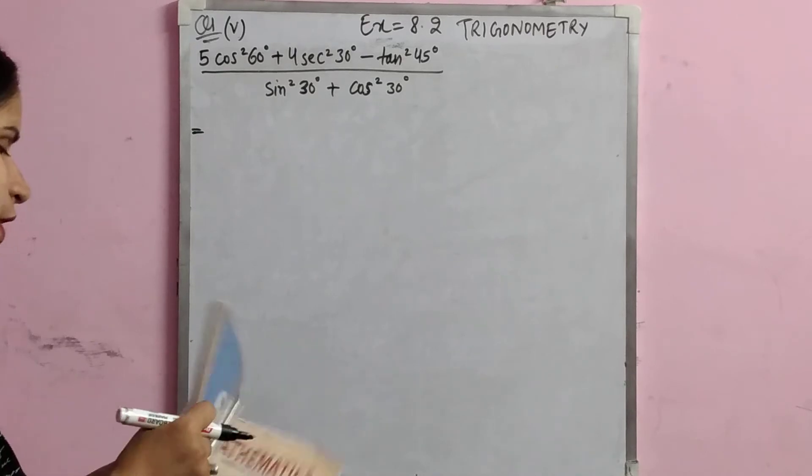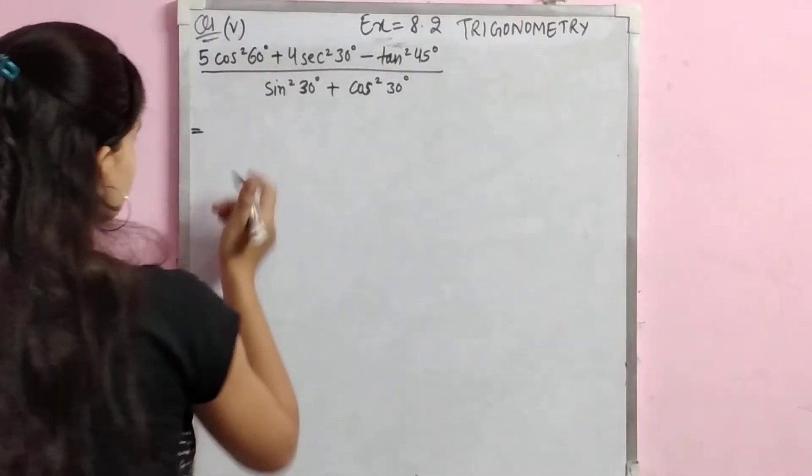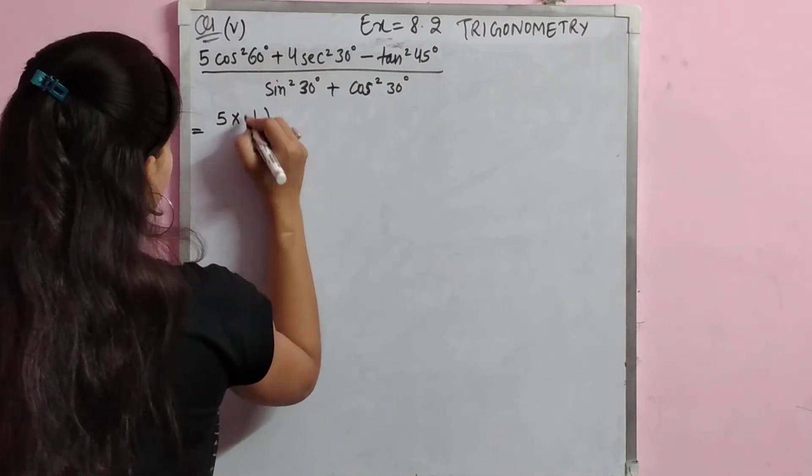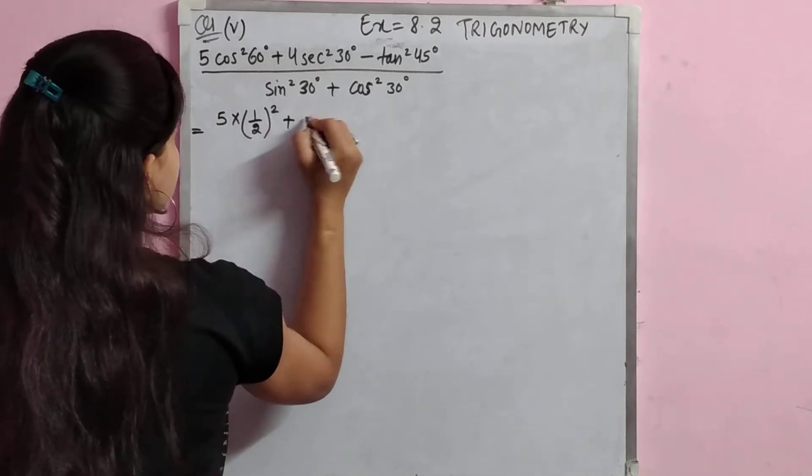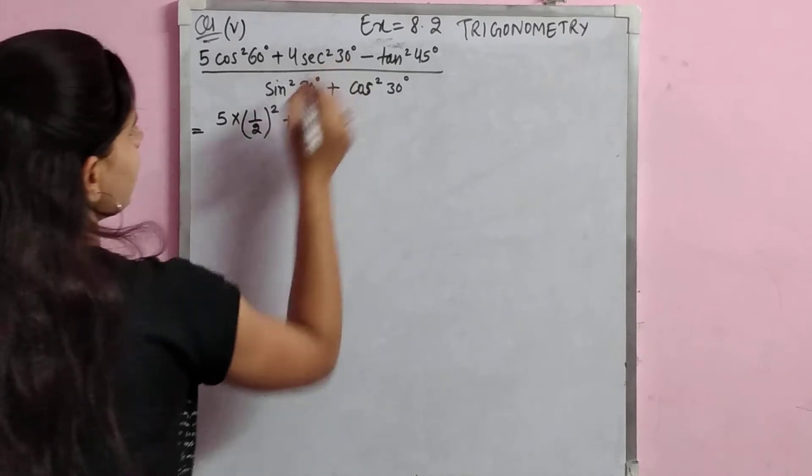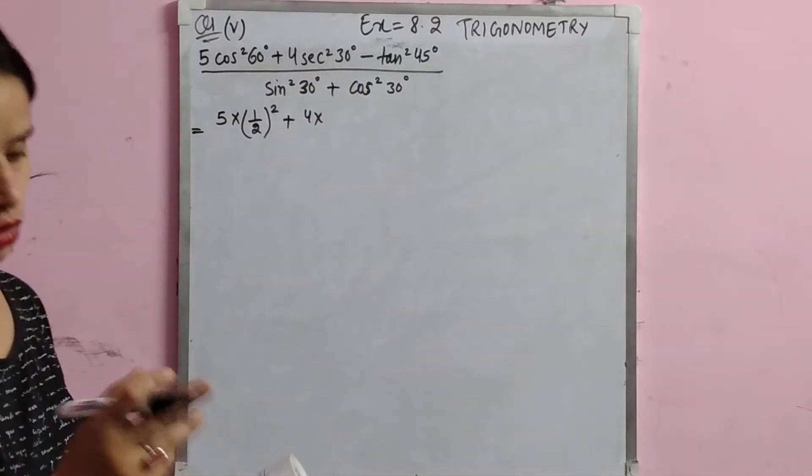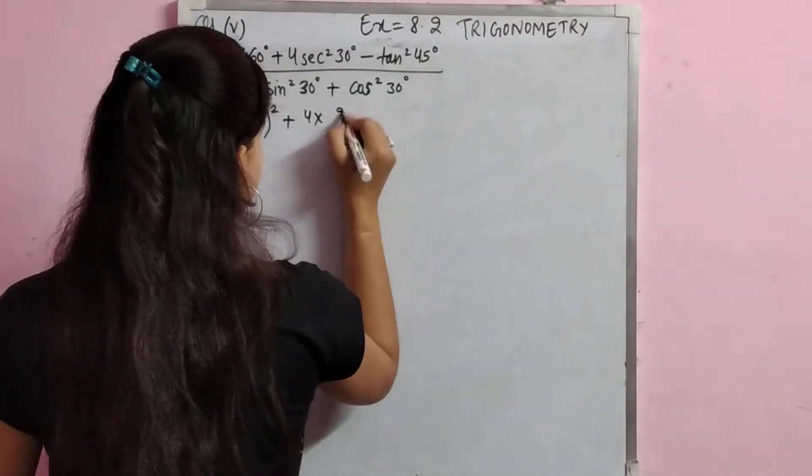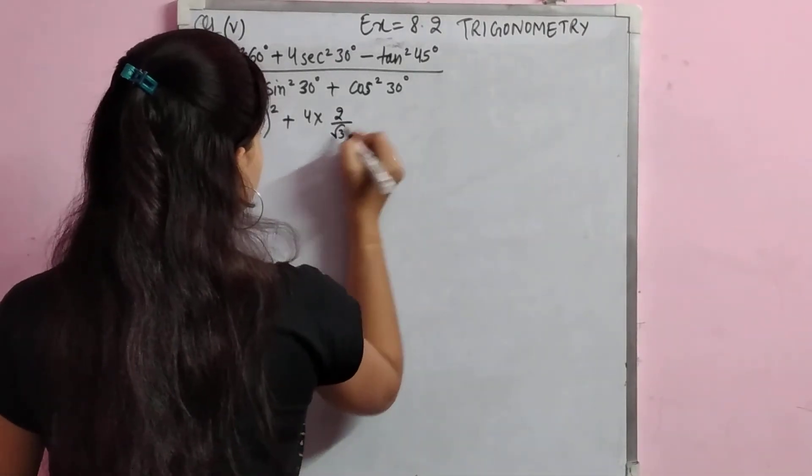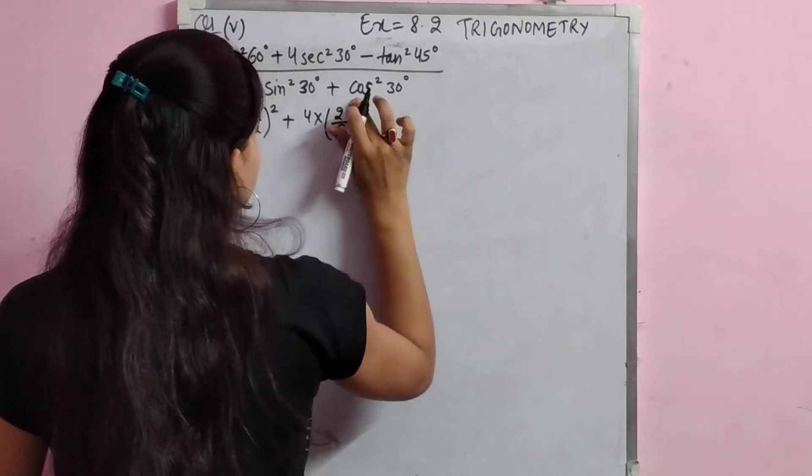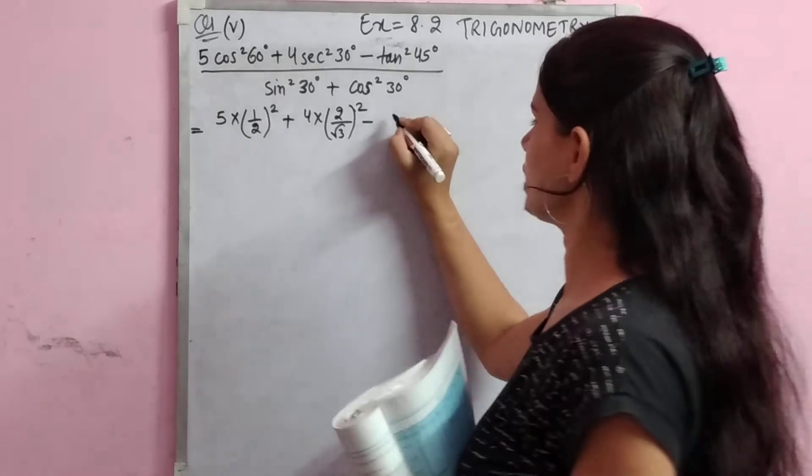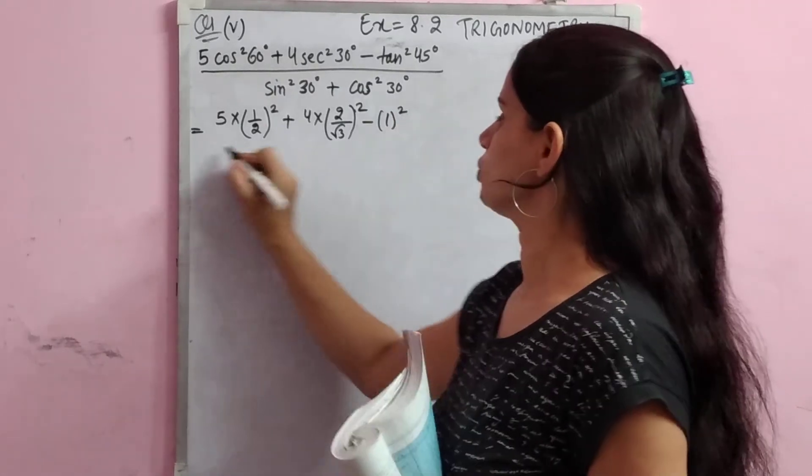We are going to substitute the values. Cos 60° is equal to 1 by 2, so cos² 60° equals 1 by 2 squared. Similarly, sin 30° equals 1 by 2 squared, and for the other terms we use 2 root 3, which means 2 whole squared. Tan 45° equals 1, so tan² 45° equals 1 whole squared.